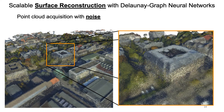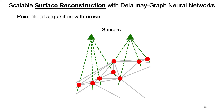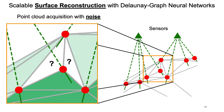Zooming in on the point cloud we can see that a real point acquisition is often contaminated with defects such as noise and outliers. Such defects can lead to problems when we want to use trivial rules to apply an empty-full labeling to the tetrahedralization. For the two tetrahedra marked with a question mark the empty-full labeling is ambiguous: the tetrahedron on the left lies behind as well as in front of an input point, and the tetrahedron on the right has no associated visibility information at all.